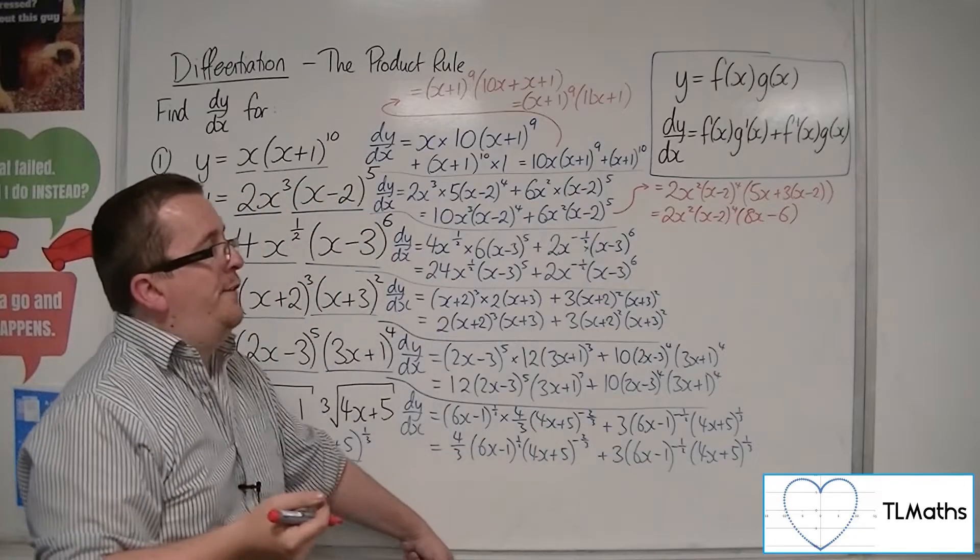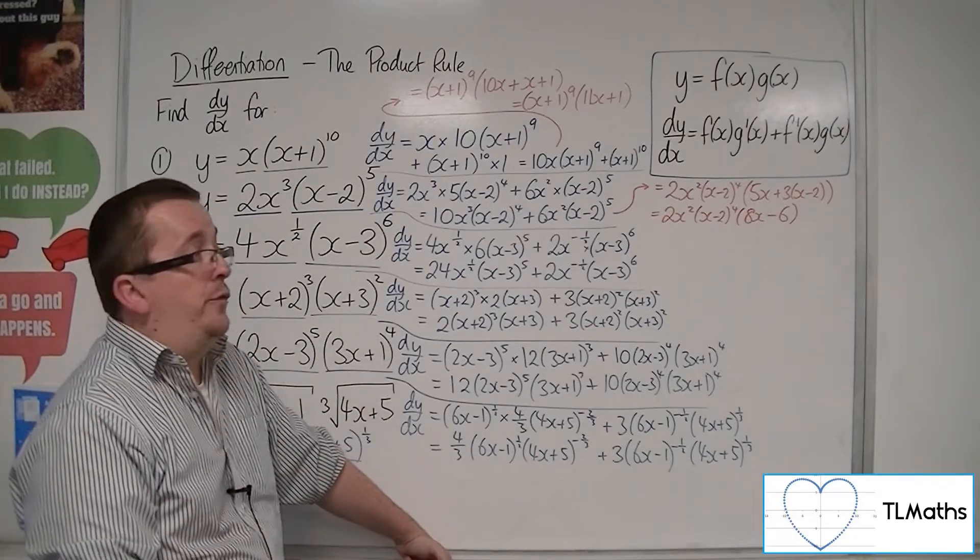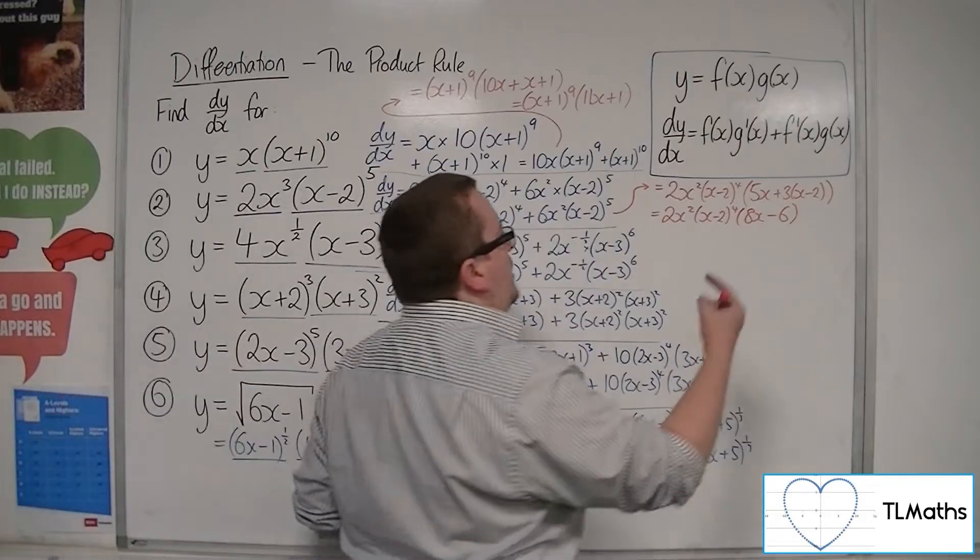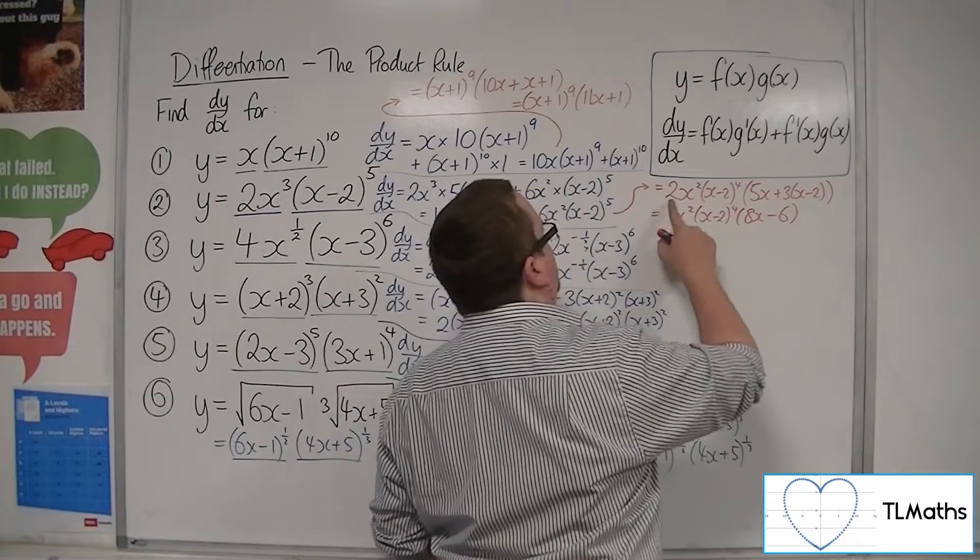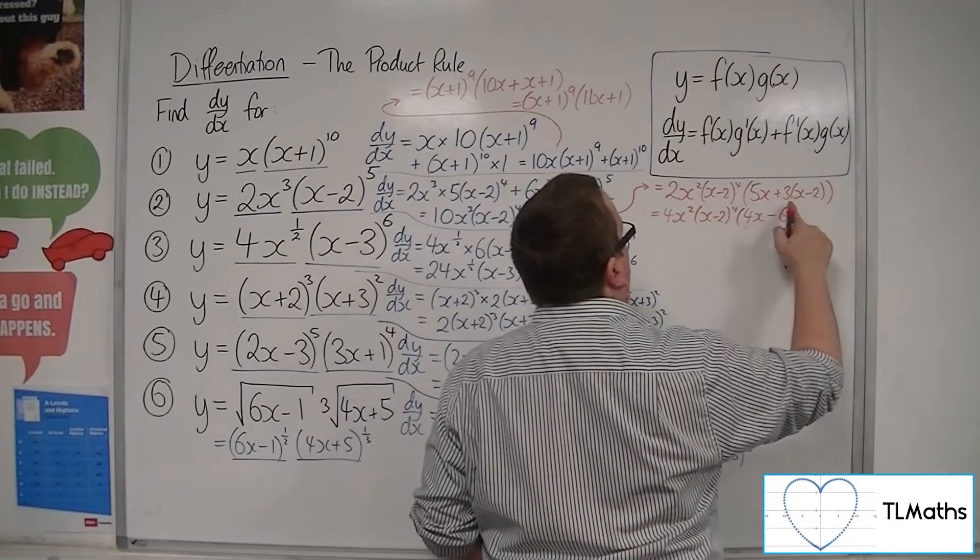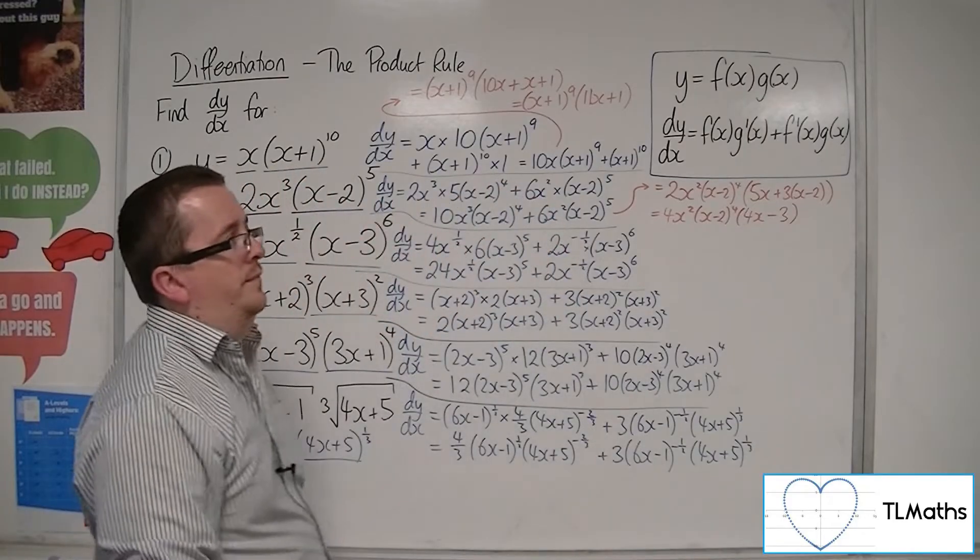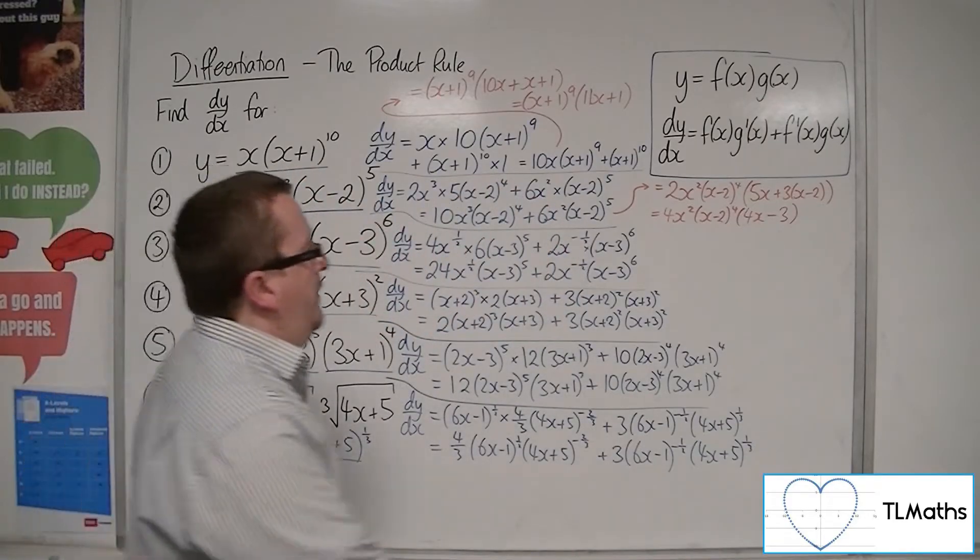Now, to be in a fully factorised form, that last bracket there has got a factor of 2. So I could pull the 2 out so that I have 4x-3 inside that bracket. That's a valid move.